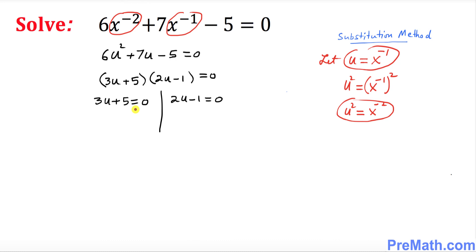Let's go ahead and solve for u. I'm going to subtract 5 from both sides. So 3u equals negative 5, divide by 3, so u turns out to be negative 5 over 3.